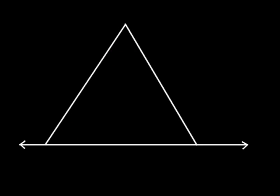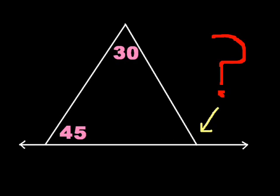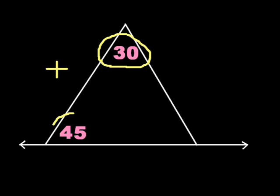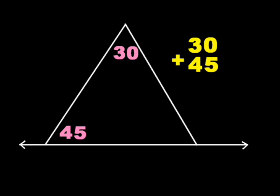Given that the measurement of the first two angles is 45 and 30, what is the measurement of the exterior angle? You can solve this by using the exterior angle theorem. This states that the sum of the two remote interior angles is equal to the measurement of the exterior angle. So, let's solve it. 30 plus 45 is equal to 75. Thus, this is the measurement of the exterior angle.